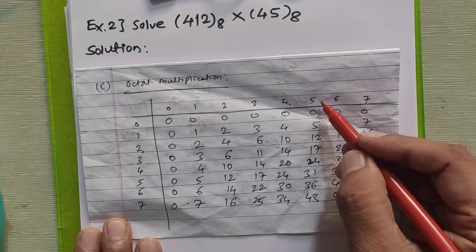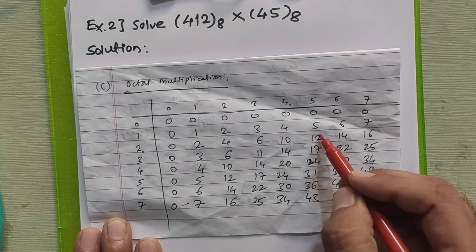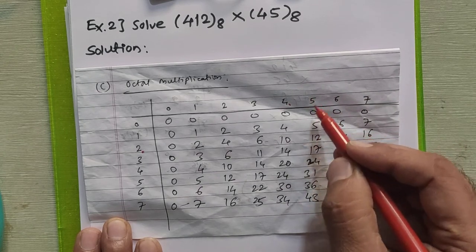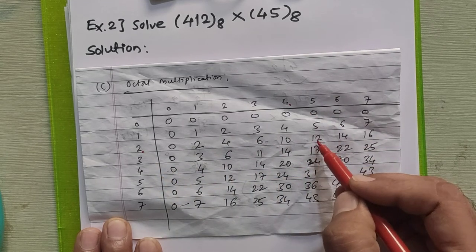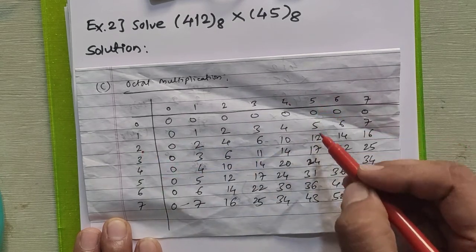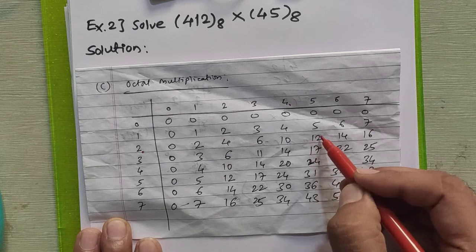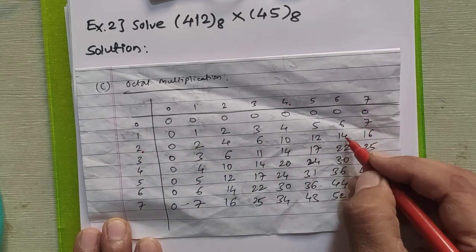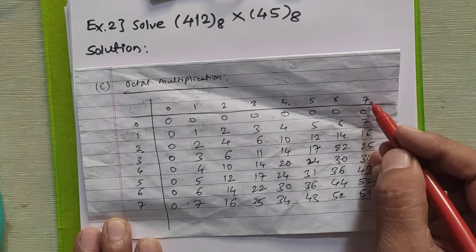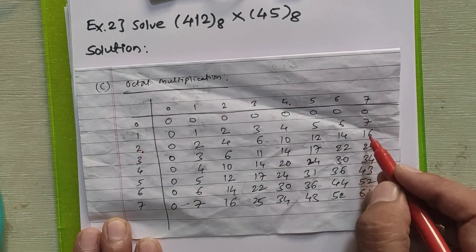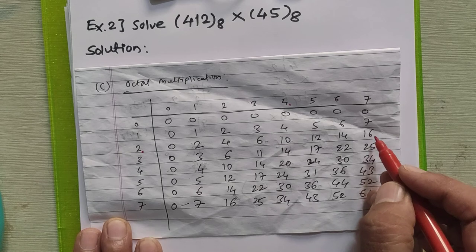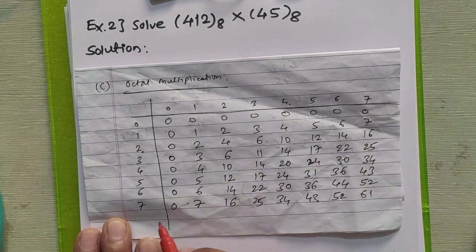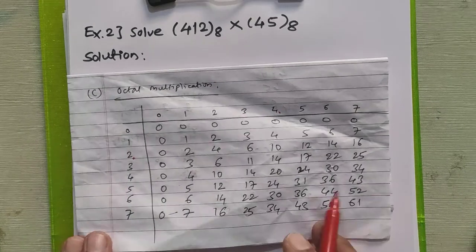2×5=10 but in octal it is 12. This way we convert all decimal products to octal: 2×5=12 in octal, 2×6=12 decimal → 14 in octal, 2×7=14 decimal → 16 in octal. Similarly, you can generate further rows of the multiplication table.